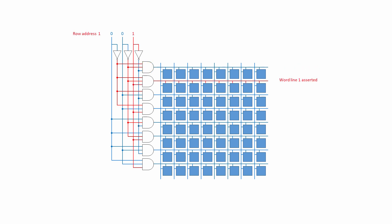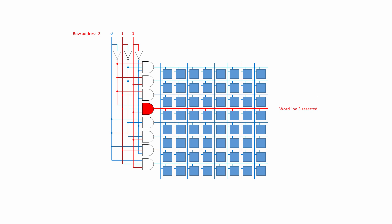Now the row address 001 is applied to the inputs, and a different combination of lines inside the decoder are now high. Only the second AND gate down has three inputs which are high, so only the second word line, word line 1, is asserted. This is row address 010, the number 2 in denary — word line 2 is asserted. This is row address 011, 3 in denary — word line 3 is asserted.